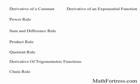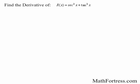Let's go through these examples. Find the derivative of r of x equals secant squared of x plus tangent squared of x. We need to use the sum rule to find the derivative of the individual functions. Recall that secant squared of x and tangent squared of x is the same thing as secant of x raised to the power of 2 plus tangent of x raised to the power of 2.